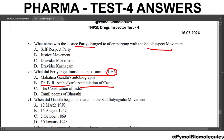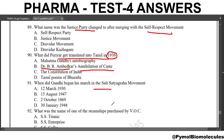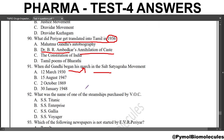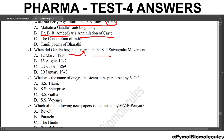Next question: when did Gandhi begin his march in the Salt Satyagraha movement? The answer is 12th March 1930 — the Dandi March. Next question: what was the name of one of the steam ships purchased by V.O.C.? The answer is option C, S.S. Gallia.